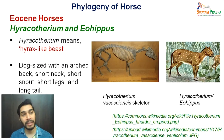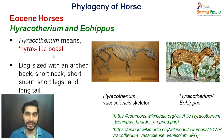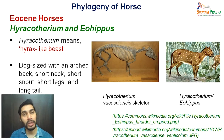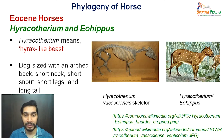Hyracotherium, or Eohippus, are the ones belonging to the Eocene horses. The word Hyracotherium comes from 'hyrax-like beast' — hyrax being a mammal similar to a daisy-like thing. These small dog-like animals resemble the earliest known fossil of Hyracotherium. They have an arched back, so there is an arched body shape which you can see here.